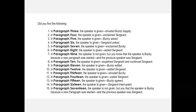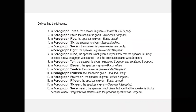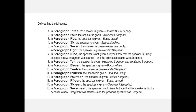Notice how it jumps down to paragraph nine, where the speaker is not given — but you know the speaker is Bucky because a new paragraph has started and the previous speaker was Sergeant. This brings us to our big rule: every time a new speaker speaks, a new paragraph is begun. At this point I remind them: remember how you read books before, and you had a whole page with just dialogue changing paragraphs but it didn't tell you who was speaking for a long time, and you had to go back up and count? You don't want to do that. We put enough speech tags in to mark the speaker for the reader, but not so many that it's difficult to read.